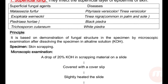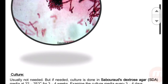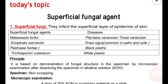The principle for diagnosis of superficial fungal agents is based on the demonstration of fungal structure in the specimen by microscopic examination after dissolving the specimen in an alkaline solution like potassium hydroxide, KOH. As we take the specimen from the skin, the skin contains a keratin layer which needs to be removed to see the fungal growth easily under the microscope. We dissolve the specimen in potassium hydroxide, which is keratolytic, making the specimen clear for microscopic examination. In this case, the specimen is a skin scraping.